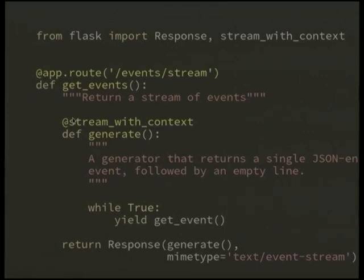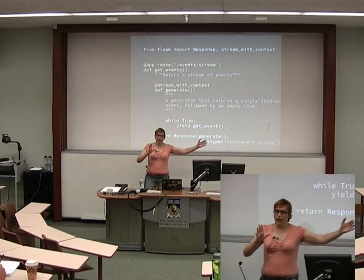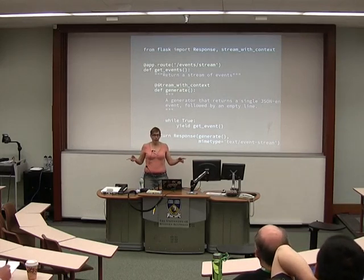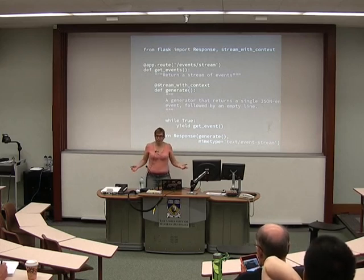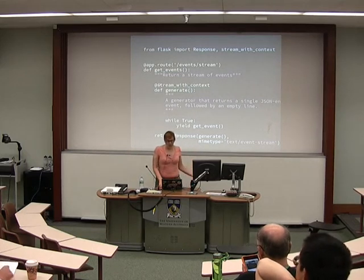We have a generator we creatively called 'generate', which loops forever yielding events. We'll generate this event stream object. Event stream is a W3C standard for a stream of events — basically 'data: ' followed by whatever you'd like, then two newlines, then another event. You just hold that connection open and every time you want to emit, you write 'data: ' and two newlines. Some browsers support this natively; others need a shim. It's a nice way to emit a stream of events.